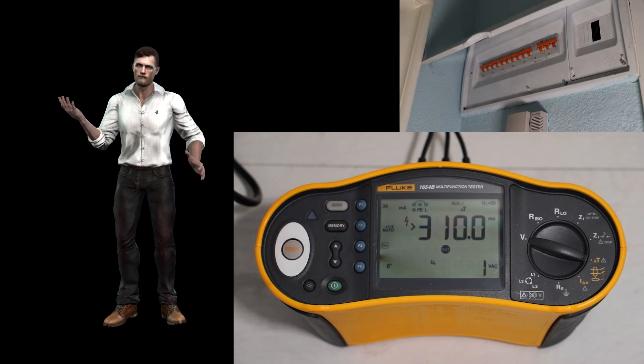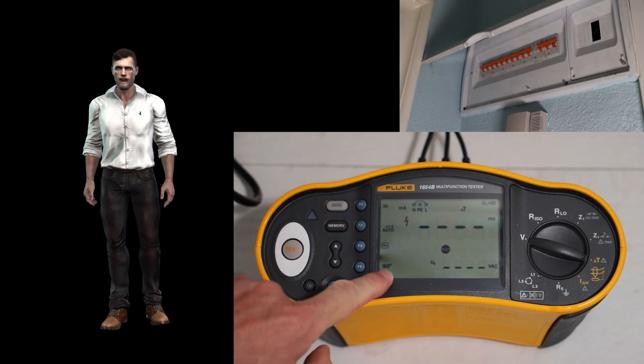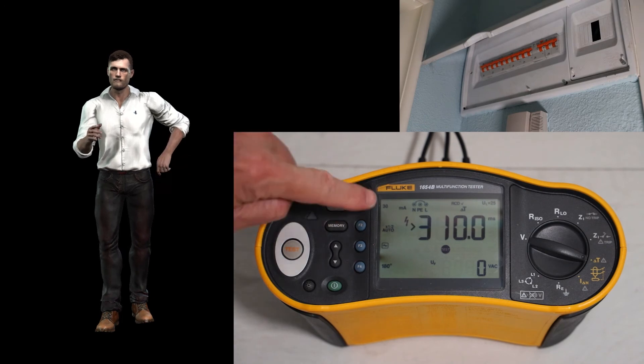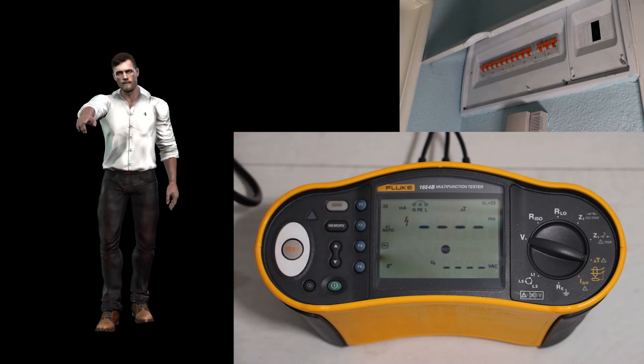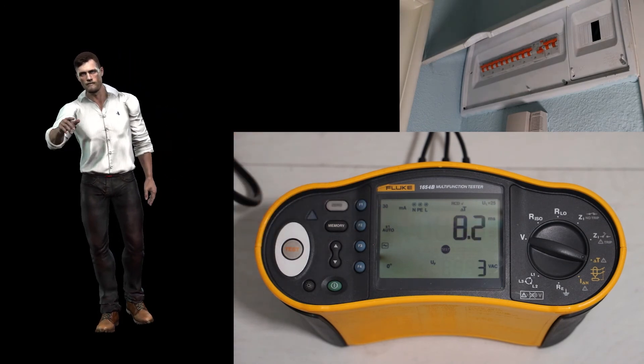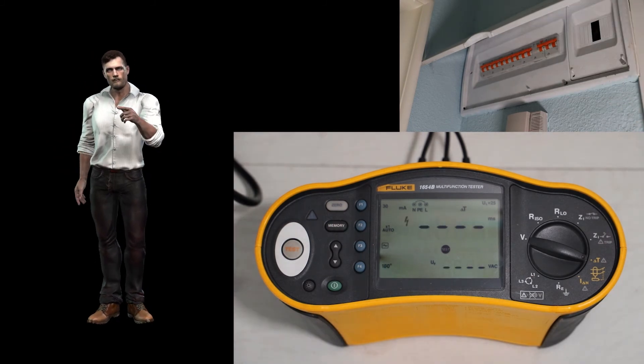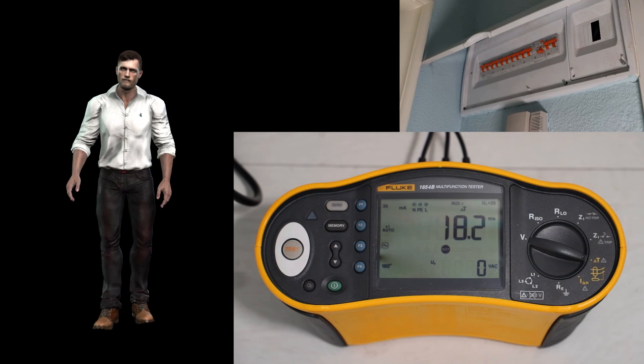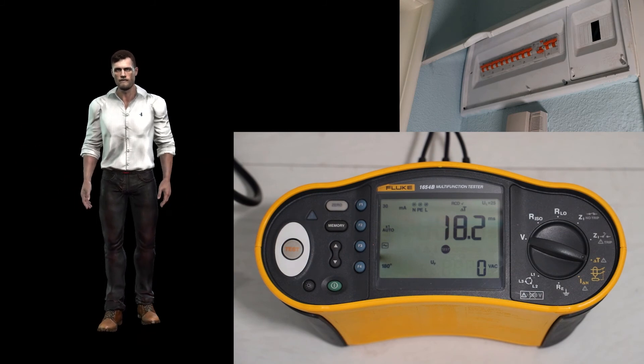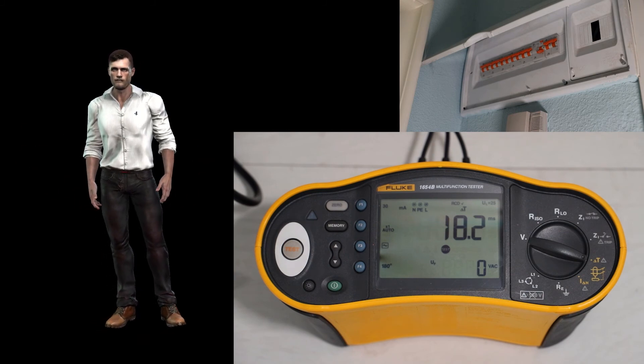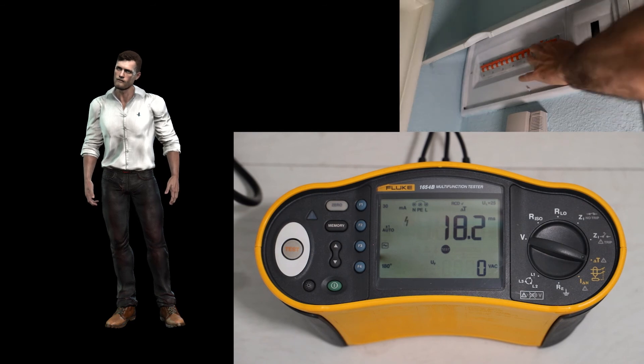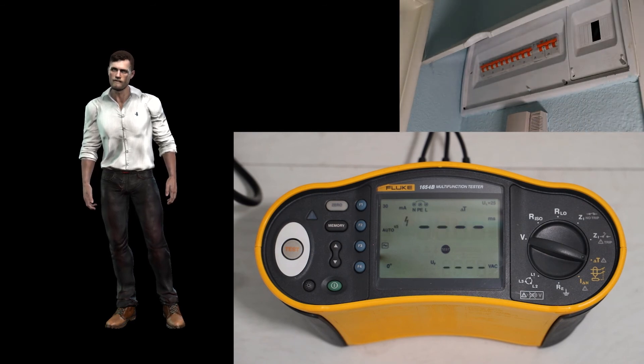We start with the positive and negative cycle at half the nominal current, and the differential should not trip. Then the instrument will proceed automatically with the tests with the positive and negative cycle at the nominal current, and if the differential protection works correctly, it should trip in both tests. If that is the case, we will have to reset the differential protection, and at that moment the instrument will detect that there is voltage again and will continue with the test automatically.